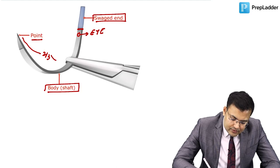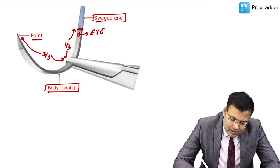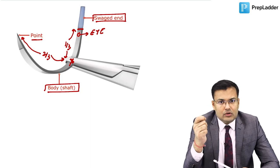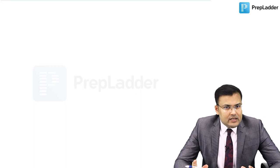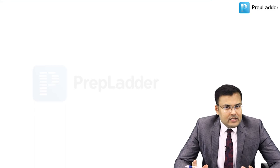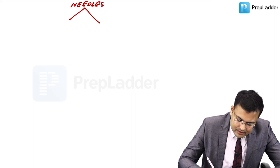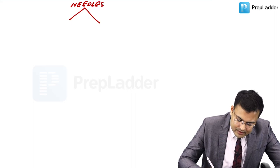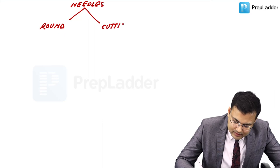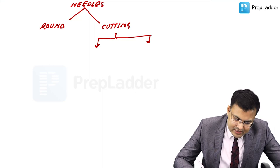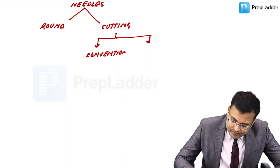Cutting needles — conventional cutting and reverse cutting — are traumatic and used for tough structures such as skin, sheath, and fascia. Now we discuss suturing techniques. First is the simple interrupted suture: the needle is inserted at a right angle to the incision, traverses both edges of the wound, and exits again at a right angle, then knots are applied.